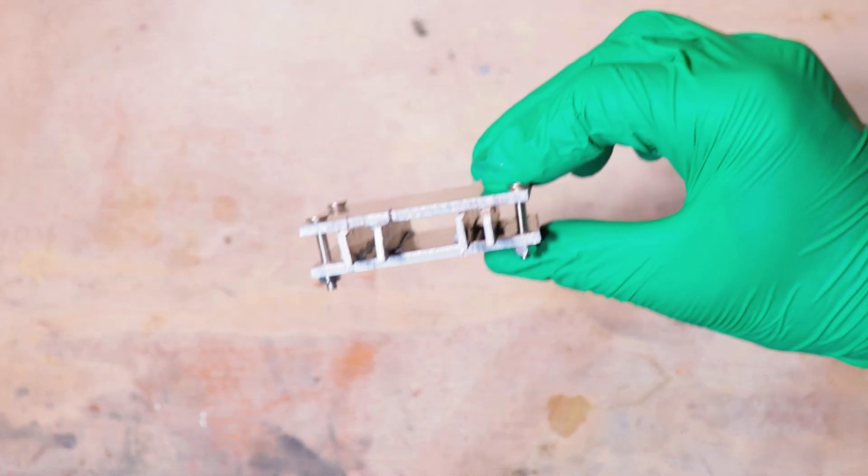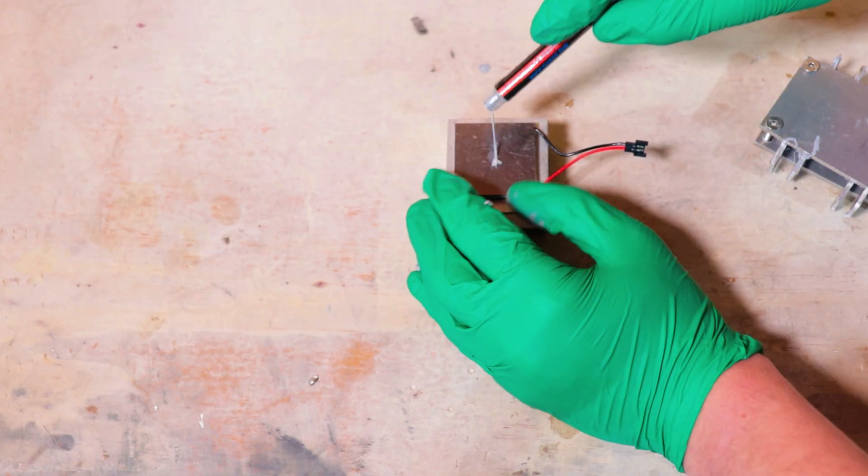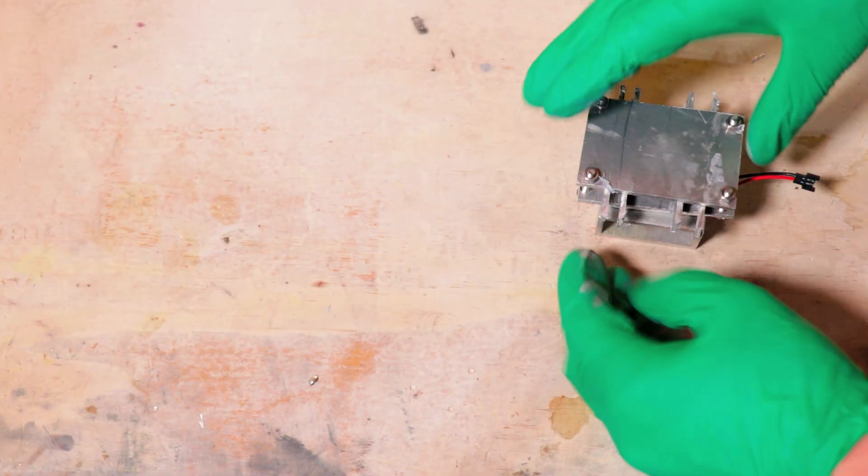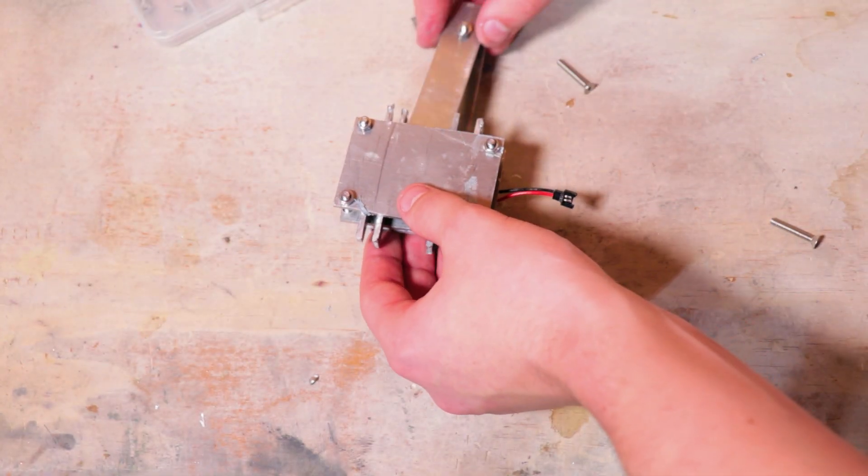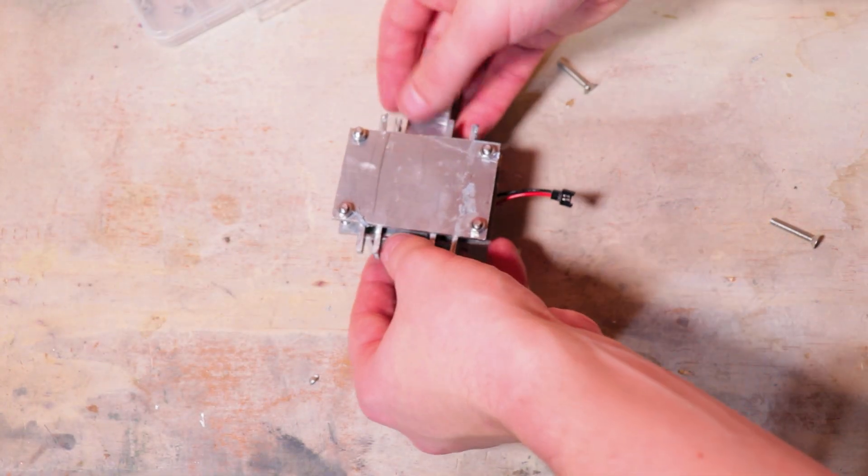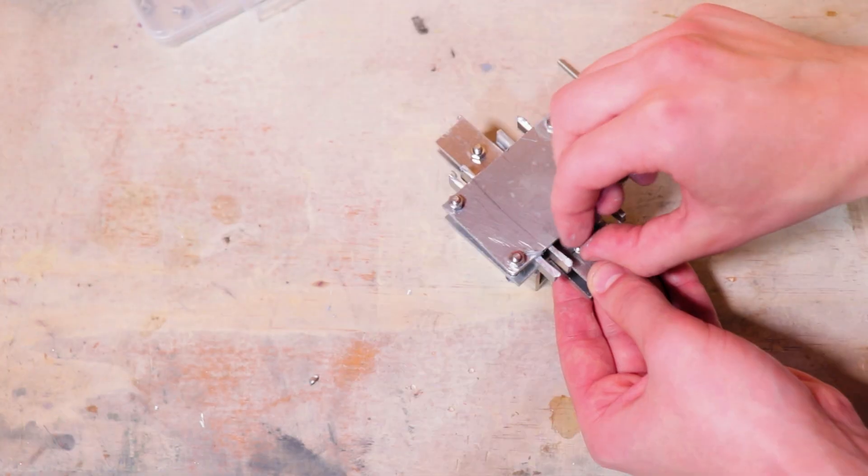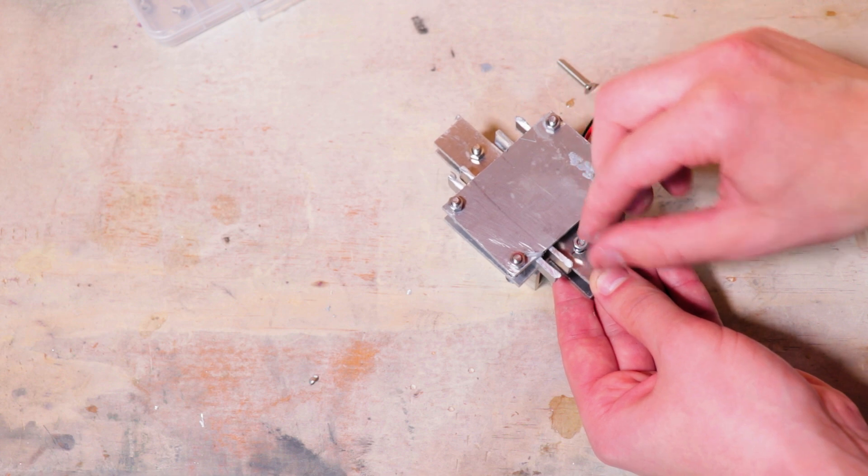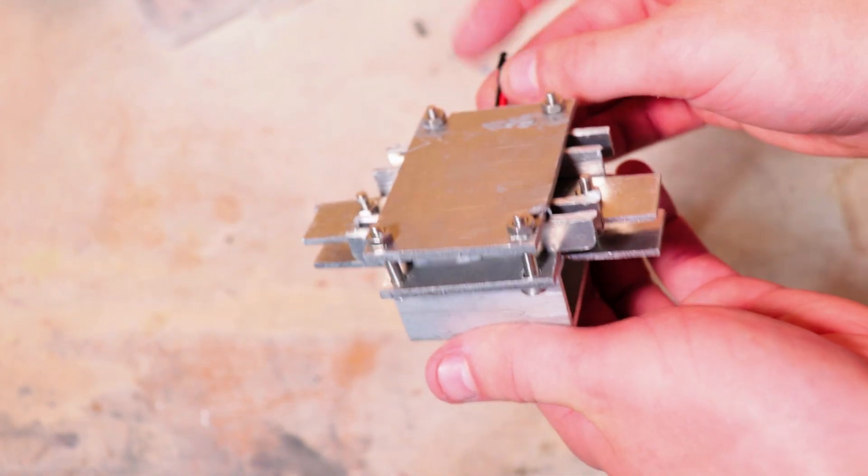Once finished, we have this absolute monstrosity of a crude heatsink. Again, before clamping everything down, I'll add a little bit of thermal paste to both sides of our module. With our hot side on the bottom to spread out the heat, and our cold side on the top to dissipate the heat, our crude thermoelectric generator is ready to test out.